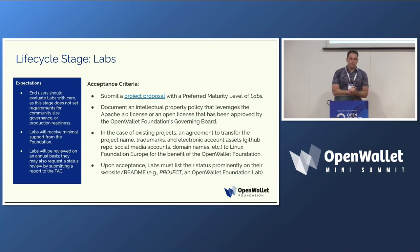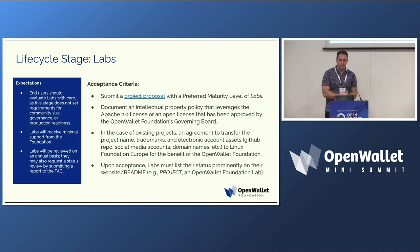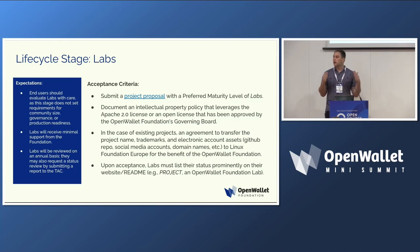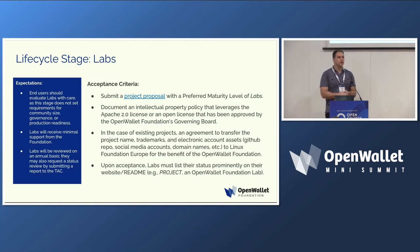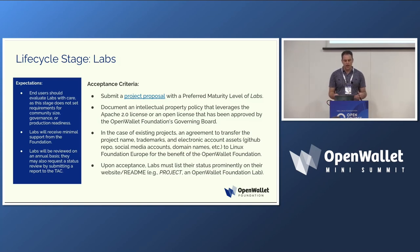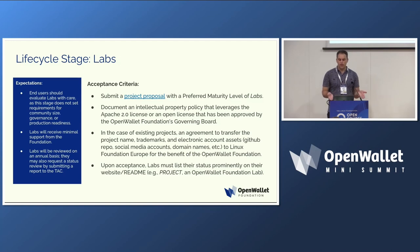Going into more detail on the lifecycle stages: labs is the most basic and simple project status. You can contribute and submit a lab in a half an hour. We really want people to contribute their experimental coding efforts to labs so we can help foster collaboration. We don't necessarily encourage people to use labs in production. Labs are reviewed on an annual basis and are explicitly for experimentation, so we don't necessarily provide CI/CD support, security, bug bounty programs, or audits for labs.